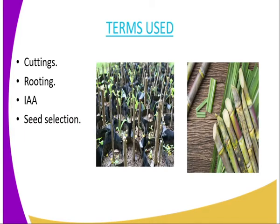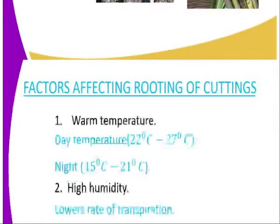The terms used: we have cuttings — as from the previous lesson, it was discussed that cuttings is one of the vegetative materials used during plant regeneration and crop production. Then we have rooting. Rooting is the process through which the cuttings are induced to produce roots. And we have IAA — this stands for indole acetic acid — a hormone used to stimulate cell division so that roots may be produced from the cuttings. Then we have seed selection, which means choosing the seeds that are supposed to be used during planting.